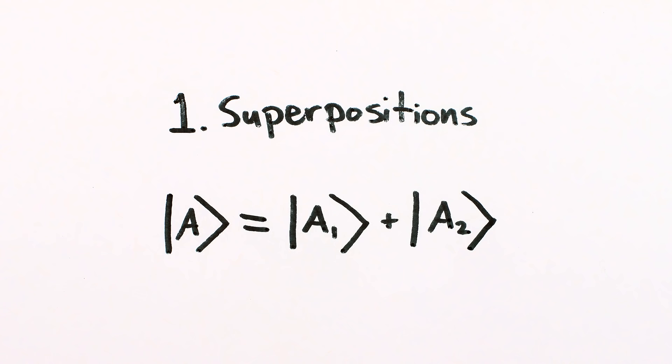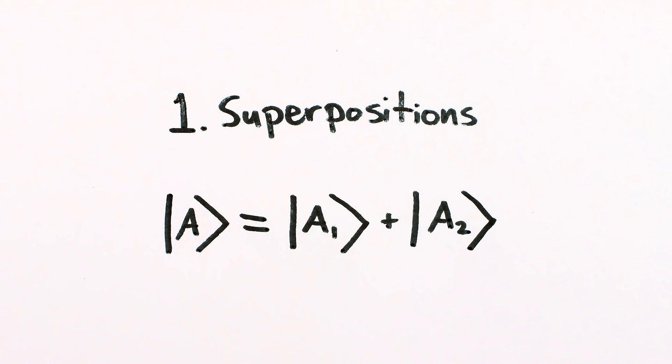In summary, in quantum mechanics, the whole is equal to the sum, that is, the superposition, of its different possible parts.